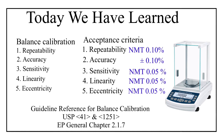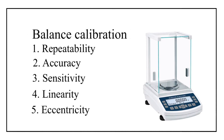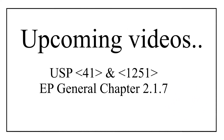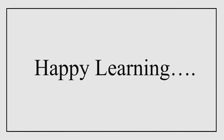Third, there are two USP general chapters on balance calibration — USP 41 and USP 1251 — and European Pharmacopoeia general chapter 2.1.7 also covers balance calibration. We will be decoding all these USP chapters in upcoming videos. Till then, stay tuned to Pharma Pill. Bye bye and happy learning!